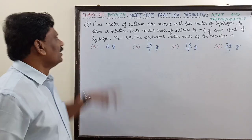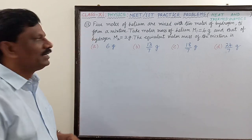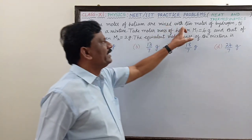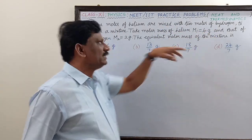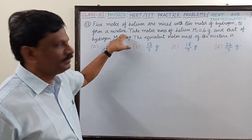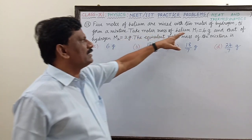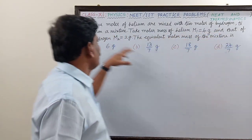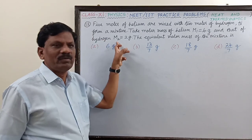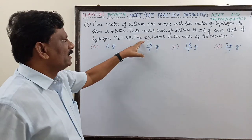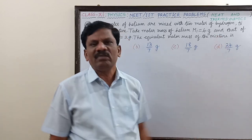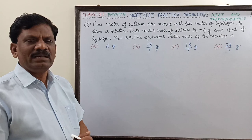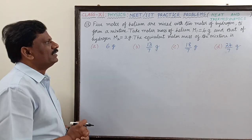Hi students, MC number 12. Five moles of helium are mixed with two moles of hydrogen to form a mixture. Take molar mass of helium as M1 equal to 4 grams and that of hydrogen as M2 equal to 2 grams. Now the equivalent molar mass of the mixture has to be determined. So very simple and easy question.